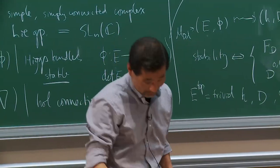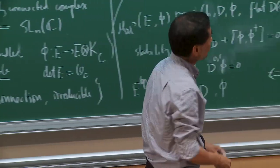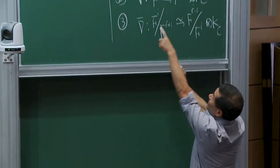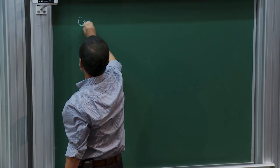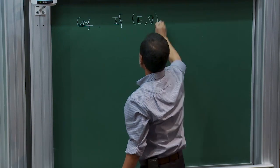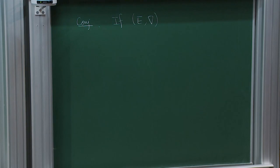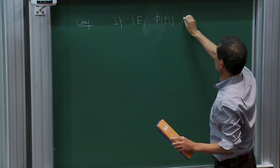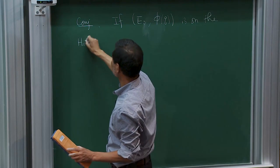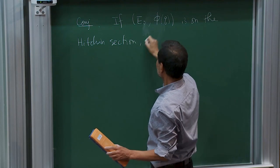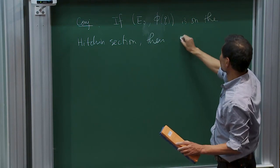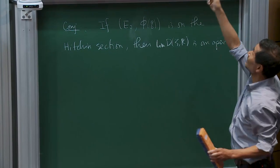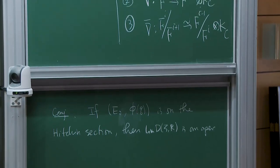An oper is a particular point on the de Rham moduli space. A connection (E, nabla) is an oper if there is a filtration 0 = F_n ⊂ ... ⊂ F_1 ⊂ F_0 = E satisfying: (1) Griffiths transversality — the connection maps F_i into F_{i-1} tensor K_C; and (2) a generation condition — the induced map F_{i+1} to (F_{i-1}/F_i) tensor K_C is an O_C-linear isomorphism. This is the definition of an oper for a filtered vector bundle with connection.